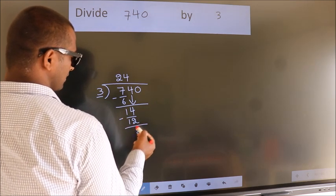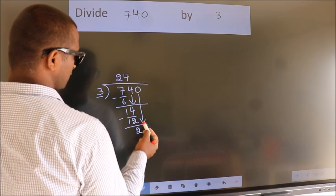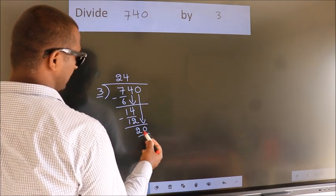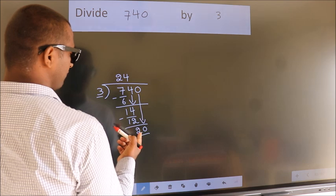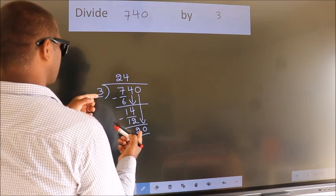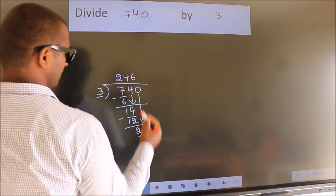After this, bring down the beside number. So 0 down, 20. A number close to 20 in the 3 table is 3 times 6 is 18.